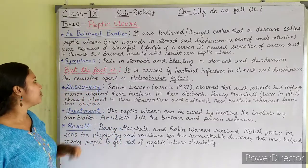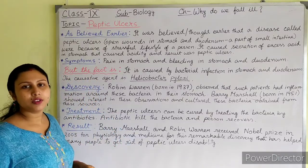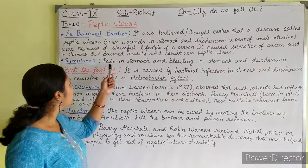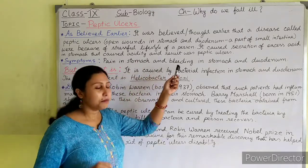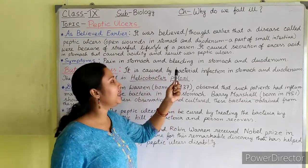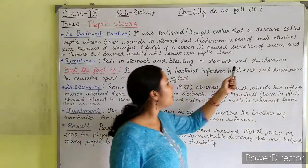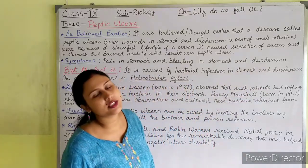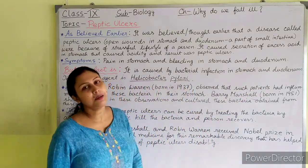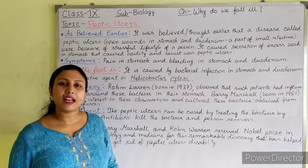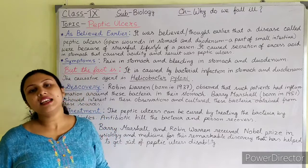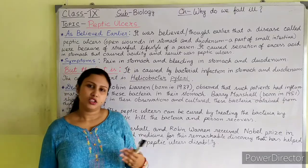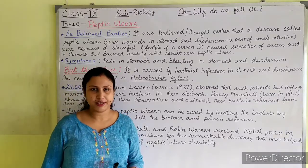Symptoms: What are the symptoms of peptic ulcers? Pain in the stomach and bleeding in the stomach and duodenum — internal bleeding.